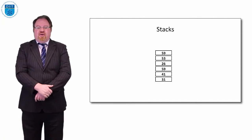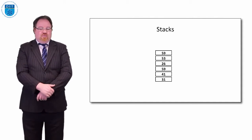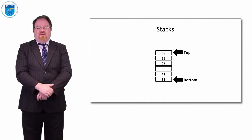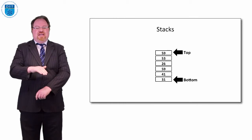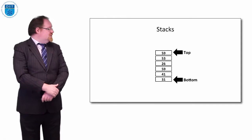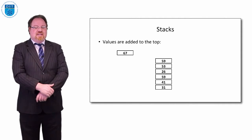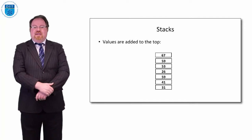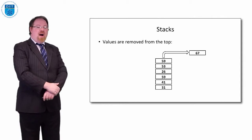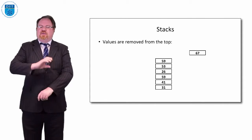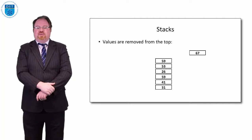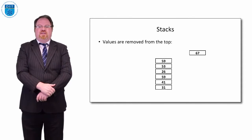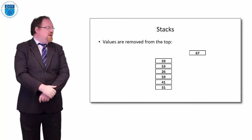Here's a stack — it's just an array but it's pointing upwards and we conceptually think of the bottom of the stack as being down there and the top is up there. If I want to add values, I have to add them on top, and if I want to take them away, I can only take them away from where the top is. So if we want to add the number 67, it can't go in the middle, it can't go in the bottom, it just has to go right on top — we push it on and stick it there. That's pushing a value onto the stack. And then if I want to pop a value out, it comes off the top. I cannot get to the number 41 near the bottom. The only way I can get to it is by popping off 67, 59, 53, 26, 59, and then I get to 41. I can only access values from the top.